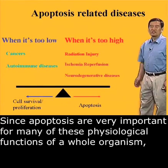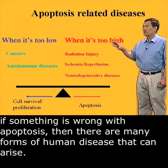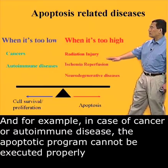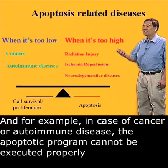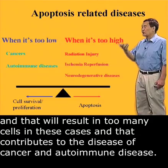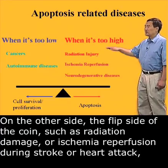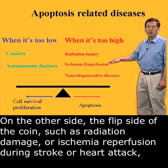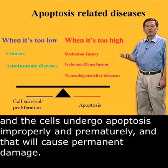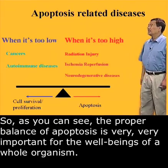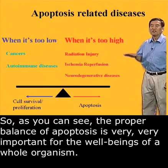Since apoptosis is very important for many physiological functions of a whole organism, if something is wrong with apoptosis, many forms of human disease can arise. For example, in the case of cancer or autoimmune disease, the apoptotic program cannot be executed properly, resulting in too many cells, which contributes to cancer and autoimmune disease. On the flip side, such as radiation damage or ischemic reperfusion during stroke or heart attack, cells undergo apoptosis improperly and prematurely, causing permanent damage. So the proper balance of apoptosis is very important for the well-being of a whole organism.